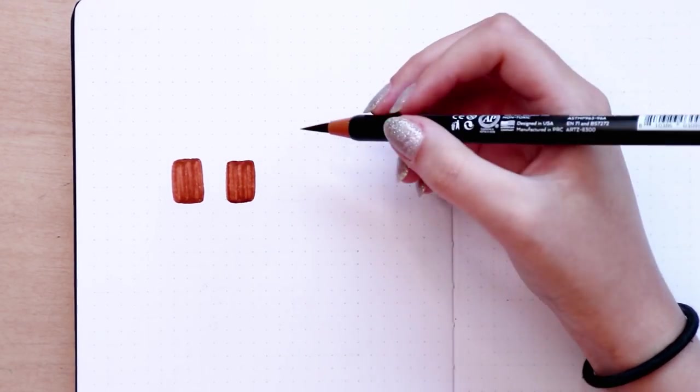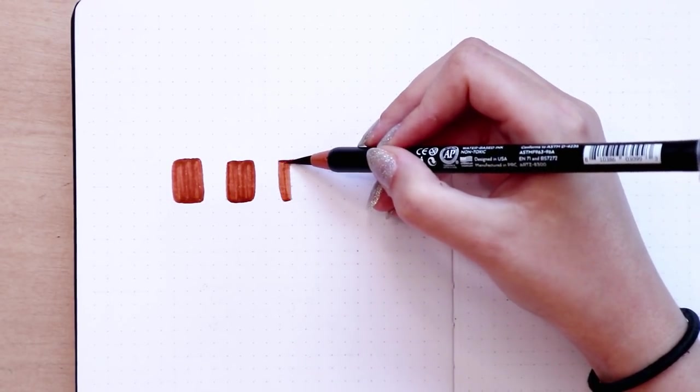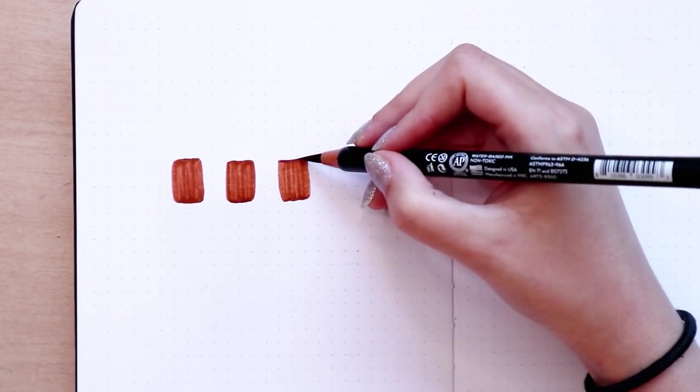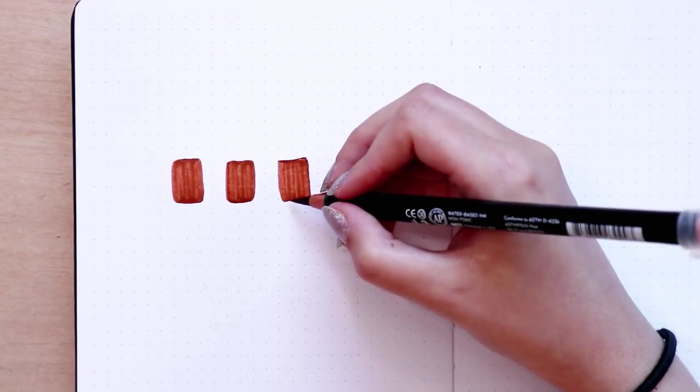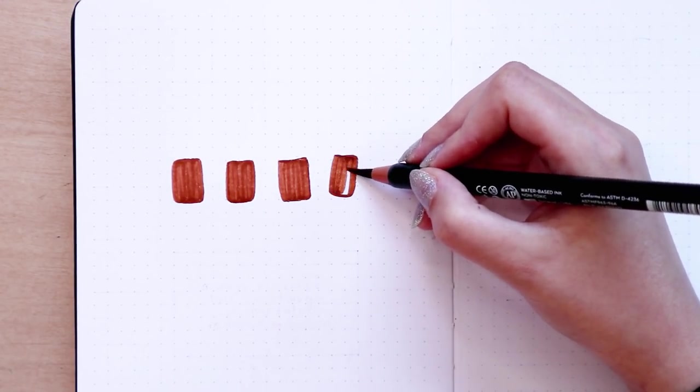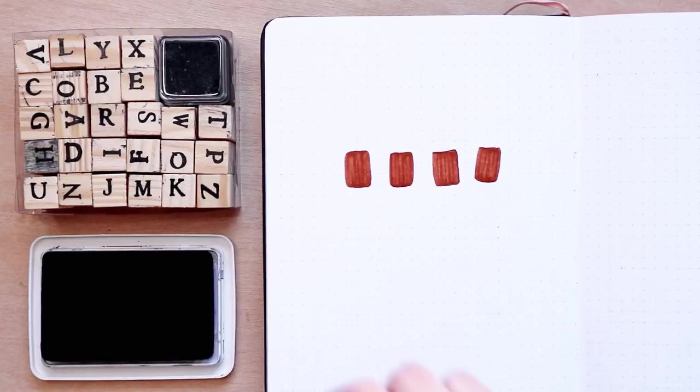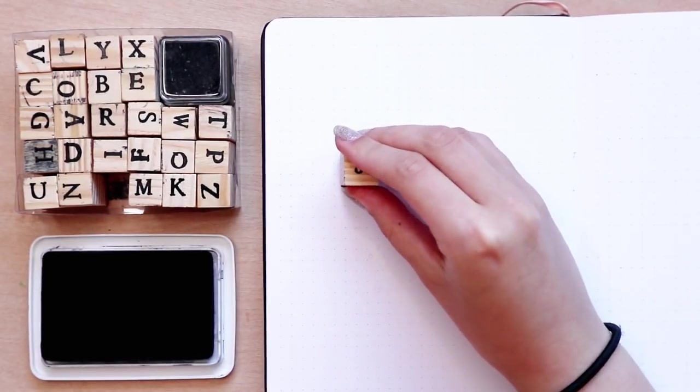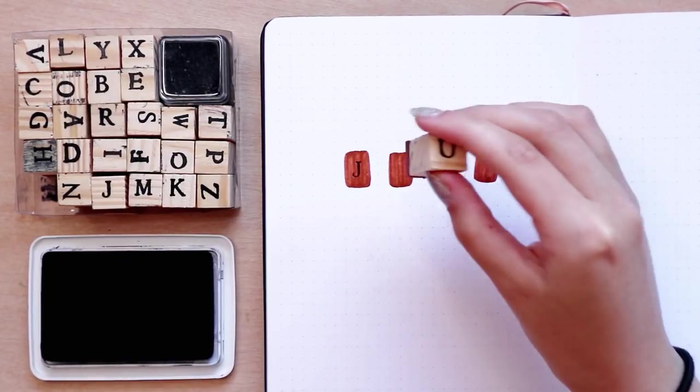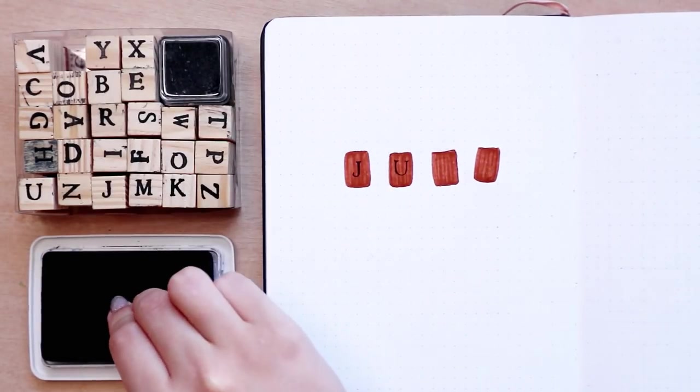Starting with the cover page, I'm doing the cover for this month on the left page as usual and for the title I'm doing these brown rectangles using the Arteza real brush pen in the number 169 to make them look like hanging wooden plaques and it's where I'm going to stamp the word July.